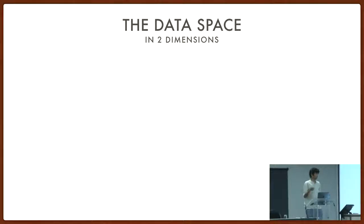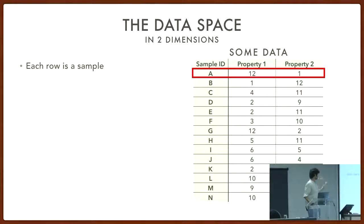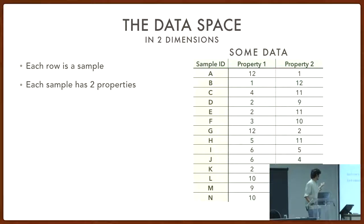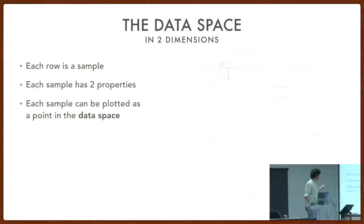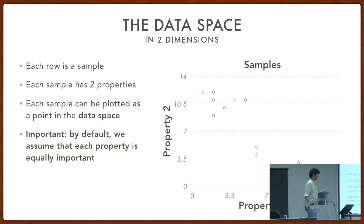The data space is just a fancy way of saying it's a two-dimensional plot when you have two dimensions. Here's some data — each row is a sample, and each sample has two properties, so you can plot this data in a two-dimensional space. This is not hard.